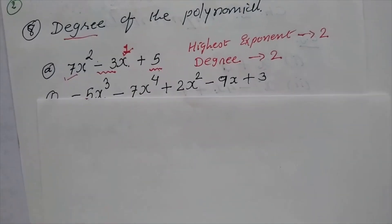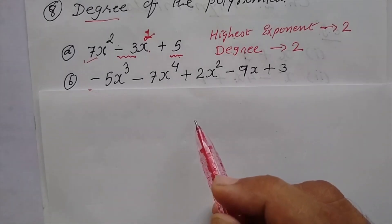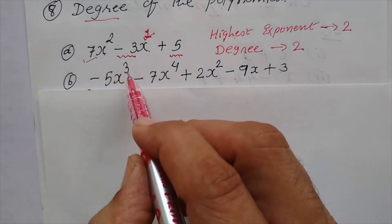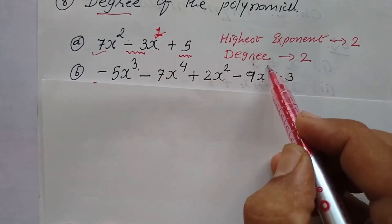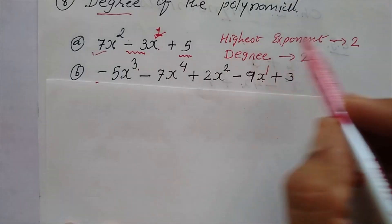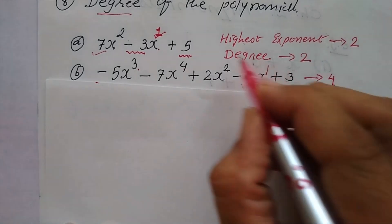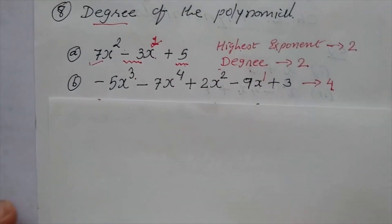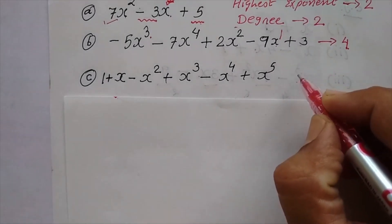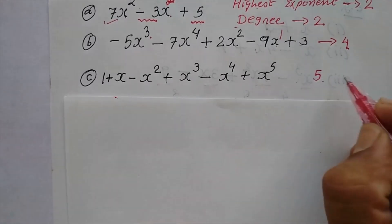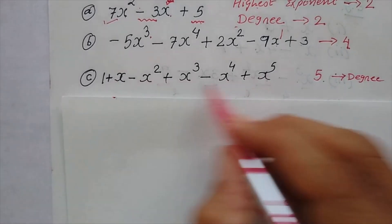In short, the highest exponent of variable x, whichever number that is, is known as the degree of the polynomial. Let us take another example. Children, this is a polynomial. In this polynomial, you have to find out the highest exponent. You observe the exponents: this is 3, 4, 2, here x is 1. So children, these are the exponents. The highest exponent in this polynomial is 4. So children, 4 is the degree of this polynomial. Next example — the highest exponent is 5, so the degree of this polynomial is 5.